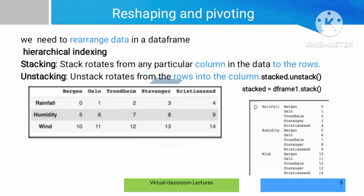The next topic is reshaping and pivoting. The data structure is converted from one format to another — that is reshaping. What we do is rearrange the data. The technique used is hierarchical indexing. Under this we have stacking and unstacking. In the stacking process, we convert a particular column into rows. In unstacking, we convert rows into columns.